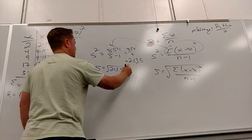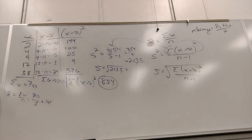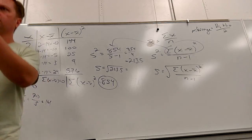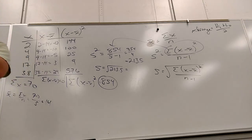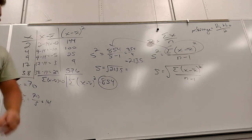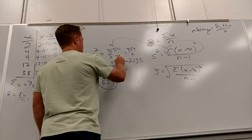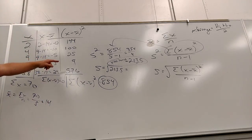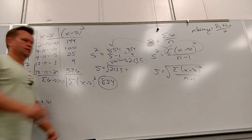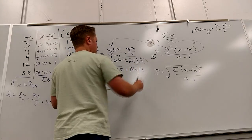I have a question — from the problem, do you just leave the variance as it is and then square root it to get the standard deviation? Yes, exactly. So I asked you for the range — that's just high minus low. Then you get the variance and take the square root to get the standard deviation. The standard deviation is the square root of 213.5, which is 14.611.